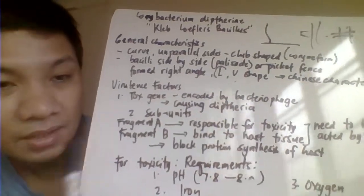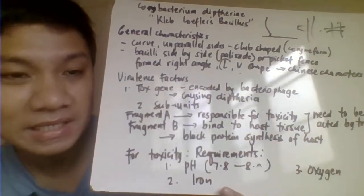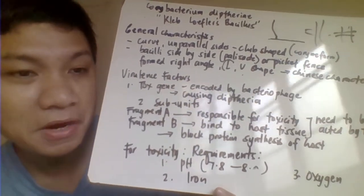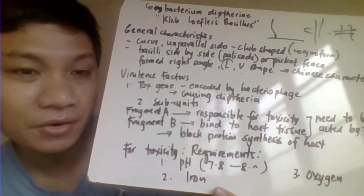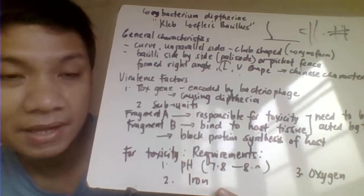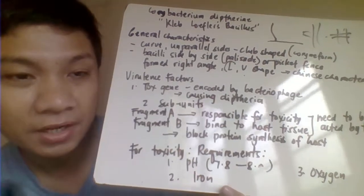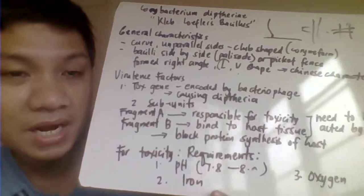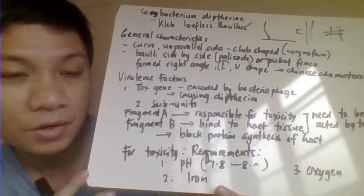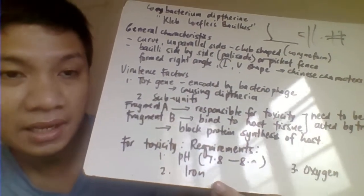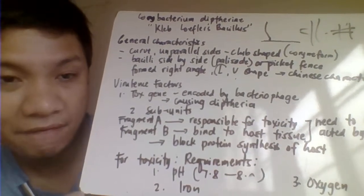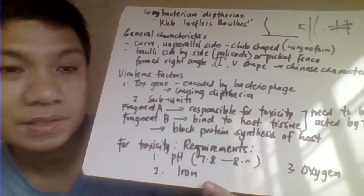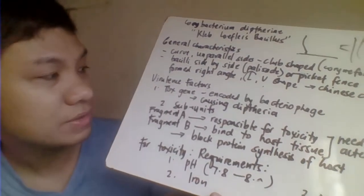The virulence factor of Corynebacterium diphtheriae — the first one is the tox gene. The tox gene is encoded by a bacteriophage. Corynebacterium diphtheriae tries to cause diphtheria only if it has been infected by the tox gene coming from the bacteriophage. The tox gene essentially produces your diphtheria toxin.